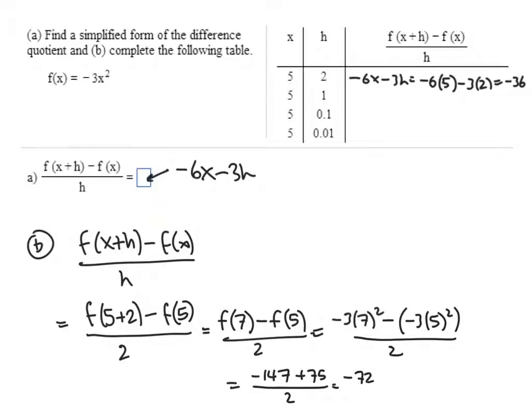That works out to be negative 72 on the top. And again, I'm just using a calculator here, but we get negative 36 again. So one way or the other, we get negative 36 for our first entry of the table. And the other entries of the table are exactly the same. It's just a different value of h. So either use the formula that you got for part a, or just go back to the original difference quotient and plug in your values. Either way, we'll give you the same answer. Thank you.